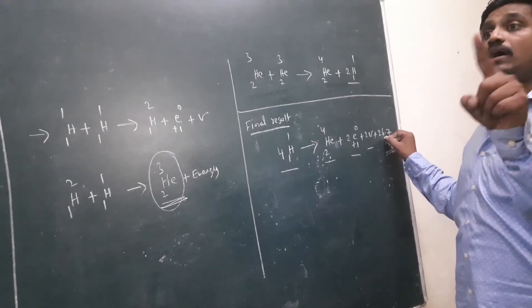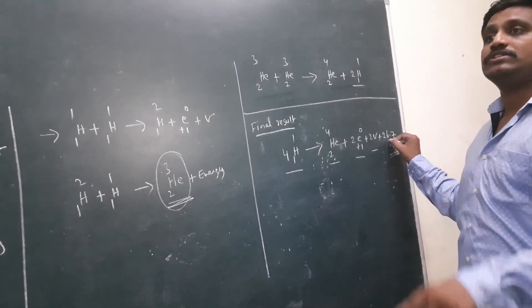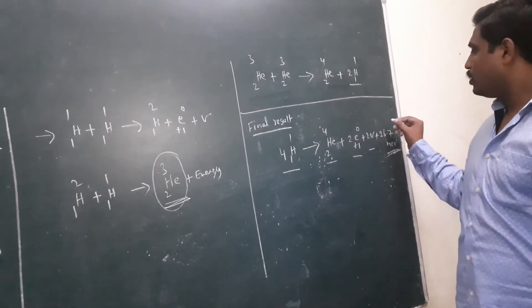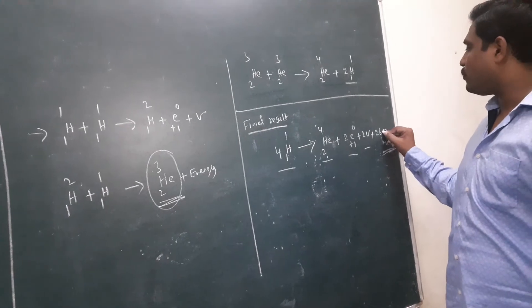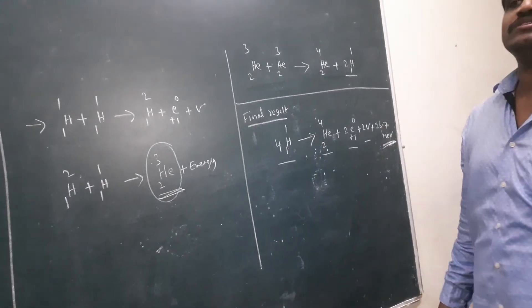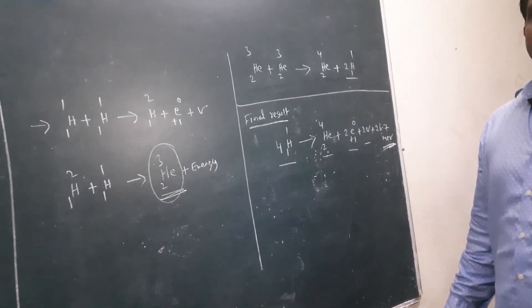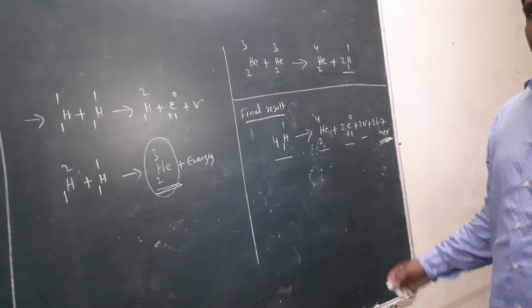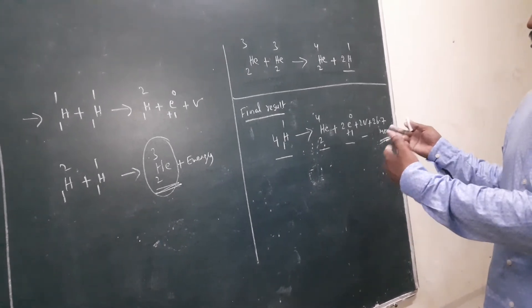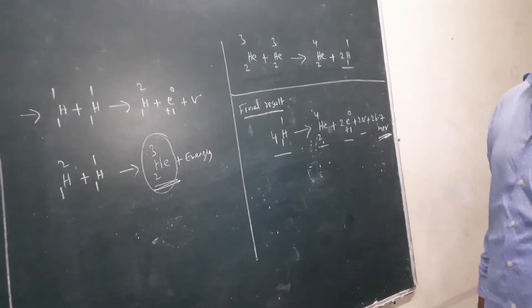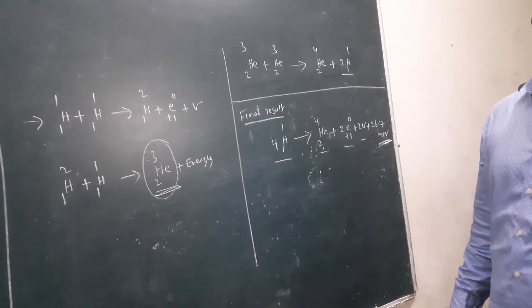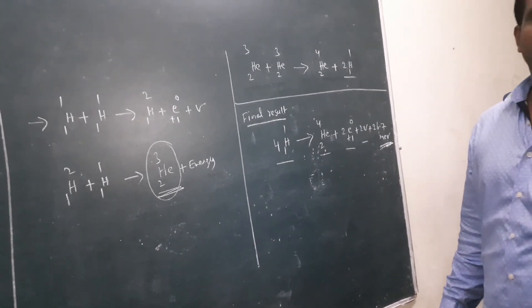In the Carbon-Nitrogen cycle, 25.7 MeV of energy is released, while in the Proton-Proton cycle, 26.7 MeV of energy is released.